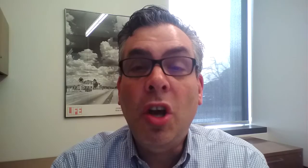If firms are earning a loss — if their average costs are above the market price — then firms will exit, which is costless. As the supply curve shifts to the left, that will drive up the market price until those losses are squeezed out. So in long-run equilibrium, no firms earn a profit and no firms earn a loss. Every firm just exactly breaks even and earns zero economic profits.